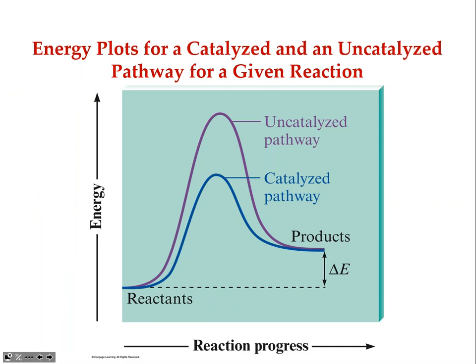This graph shows the uncatalyzed pathway in purple — higher activation energy — and the catalyzed pathway in blue — much lower activation energy. If there's only one hill, there's only one elementary step. If the alternate pathway had two steps it would have two hills; three steps would give three hills inside the catalyzed pathway.